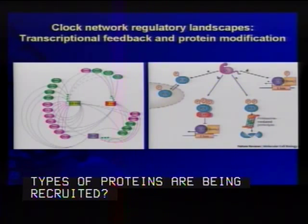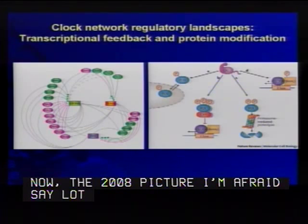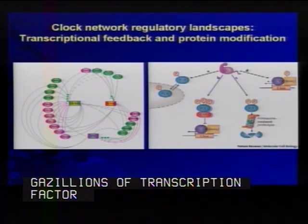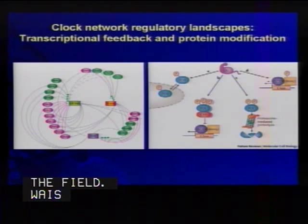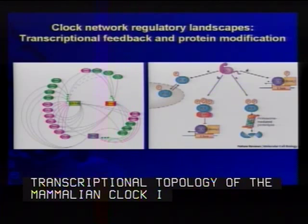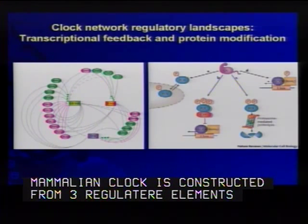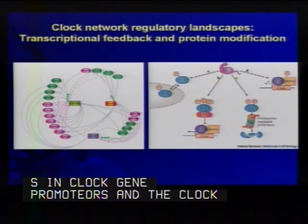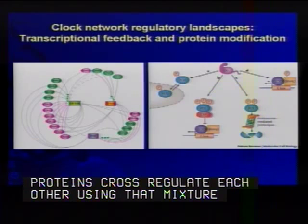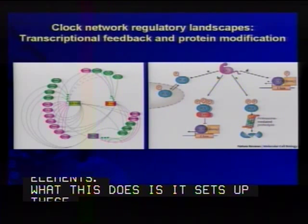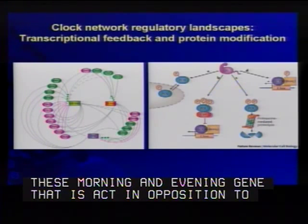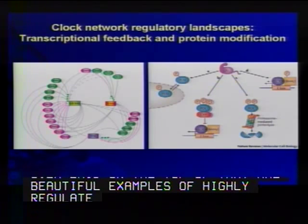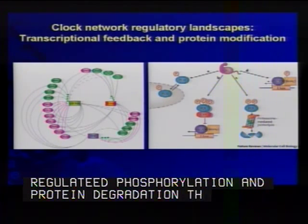The 2008 picture is a lot more complicated. Without getting hung up in transcription factor names, what's clear now is that the transcriptional topology of the mammalian clock is constructed from three regulatory elements present in different combinations in clock gene promoters, and the clock proteins cross-regulate each other using that mixture of three elements. This sets up morning and evening genes that act in opposition to each other and create the clock network. Overlaid on top of that are beautiful examples of highly regulated phosphorylation and protein degradation that appear to contribute to the pace of the oscillator.